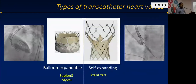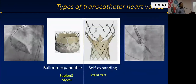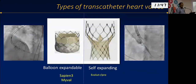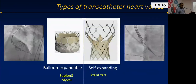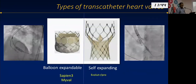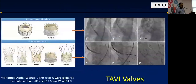We now have an Indian valve called MyVal, which is almost as good as valves available abroad. Under fluoroscopy, you can see both prototypes — the balloon-expandable and self-expanding platforms. The underlying technology is the same, but there are several valve options available.